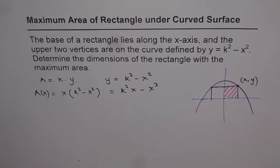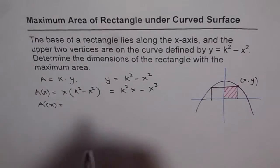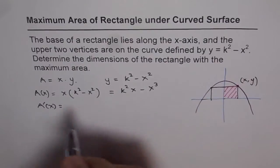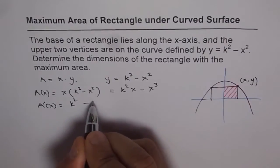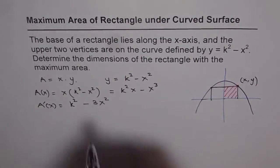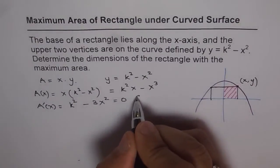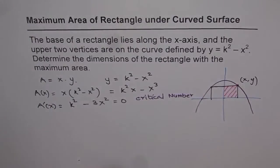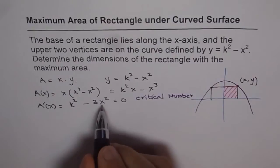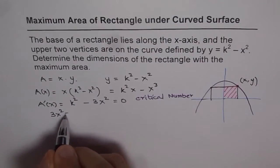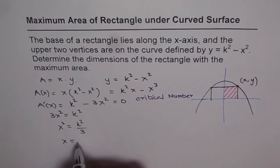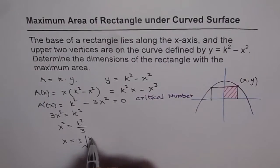To maximize the area, we find the derivative and equate it to zero to find the critical number. The derivative is dA/dx = k squared minus 3x squared. Setting this equal to zero: 3x squared = k squared, so x squared = k squared over 3, giving x = plus or minus the square root of k squared over 3, which simplifies to x = plus or minus k over square root of 3.